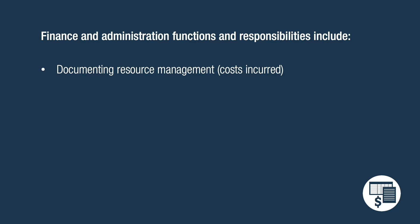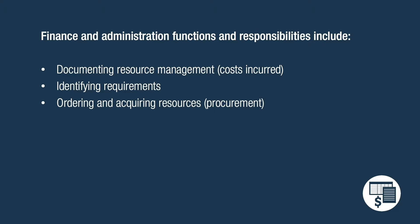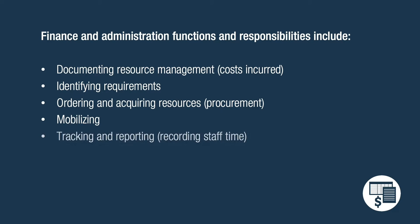Each disaster behavioral health event has financial and administrative functions and responsibilities that must be implemented. This checklist includes documenting resource management during an incident and the costs incurred, identifying requirements of the reimbursement, procuring approvals for goods during a disaster, mobilizing items to the disaster area quickly, and tracking and reporting of staff involved in the process.